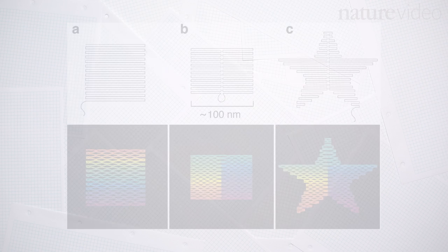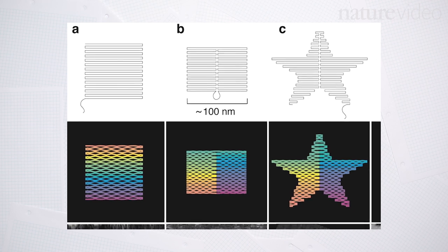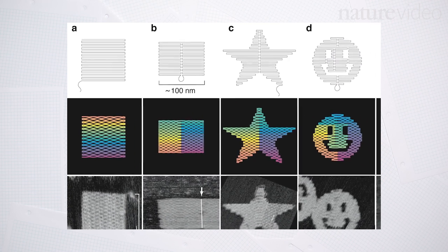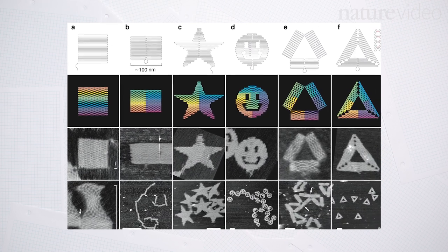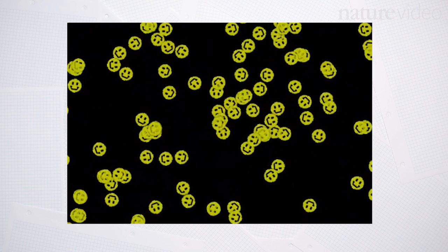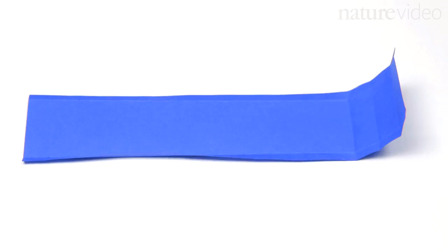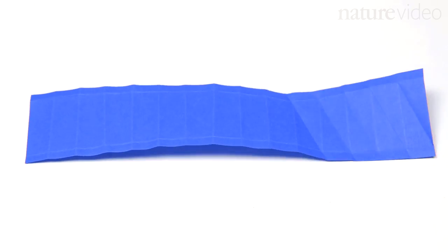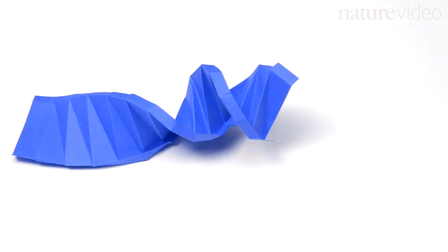In 2006 Paul Rotherman found a way to make all sorts of tiny shapes out of DNA, even miniature smiley faces. He called the technique DNA origami. Here's how it works.